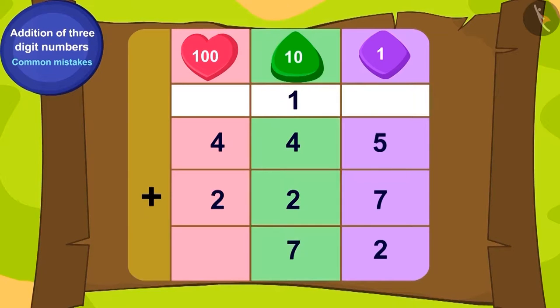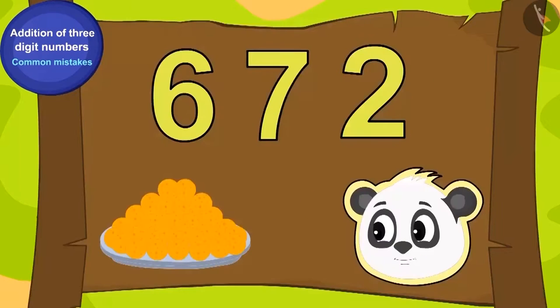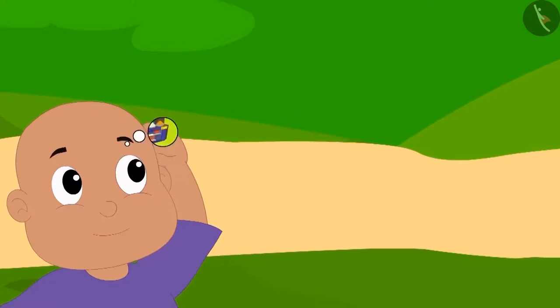Now, in the end, how many hundreds are there by adding 400 and 200? 600! Thus, the answer to Bablu's puzzle is 672 laddus.